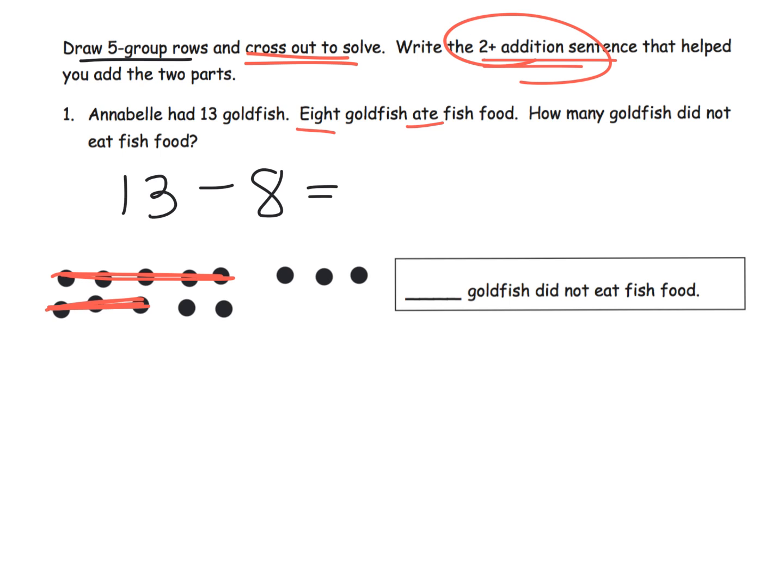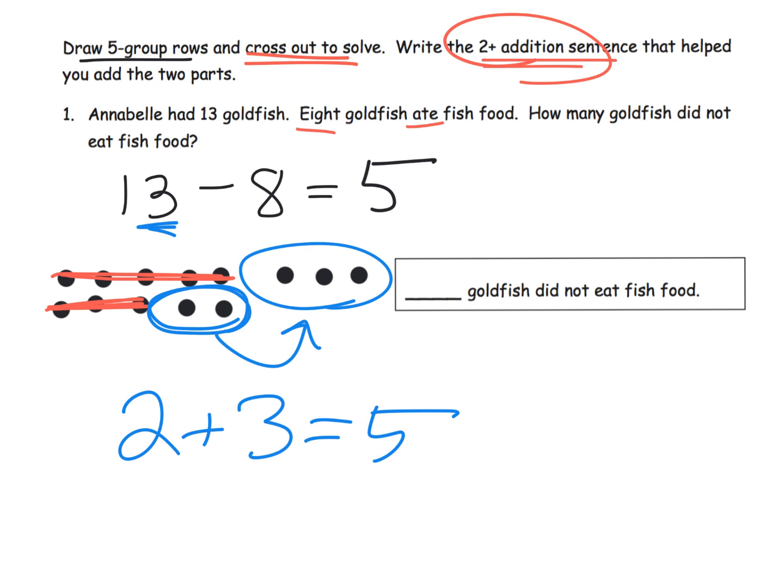Now, what is this two plus addition sentence? What they're saying is, you've got 2 remaining in your 10 frame plus the original 3 as part of the 13. So 2 plus 3 equals 5. So that means 13 minus 8 is 5. So there are 5 goldfish that did not eat the fish food. So the two plus addition sentence is this thing down here. You have your 2 remaining from the 10 frame plus the original 3 from the 13.